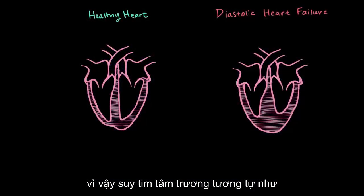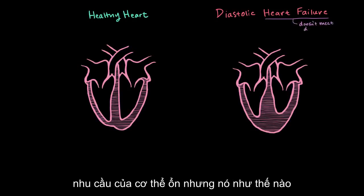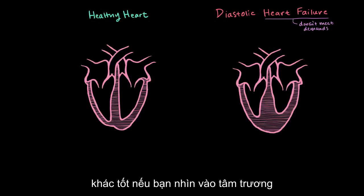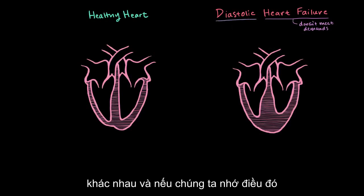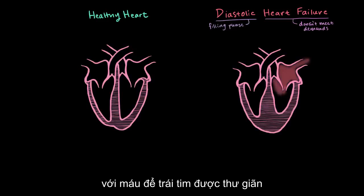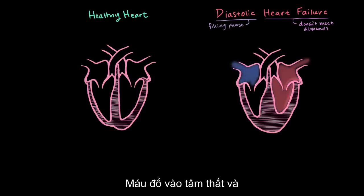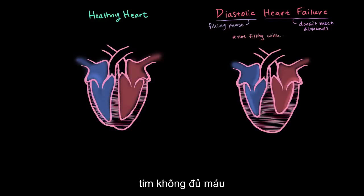Diastolic heart failure is similar to systolic heart failure in that the heart doesn't pump enough blood to meet the body's demands. But how is it different? If you look at diastolic, that clues us into how it's different. Diastole is that phase in the cardiac cycle where the heart's just filling with blood — the heart's relaxed and blood's filling into the ventricles. So diastolic failure means that the heart's not filling with enough blood.